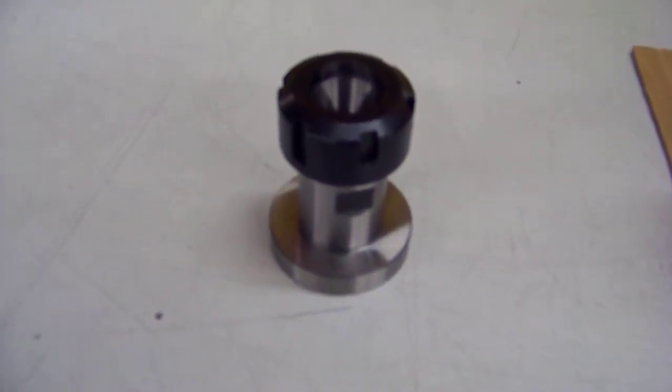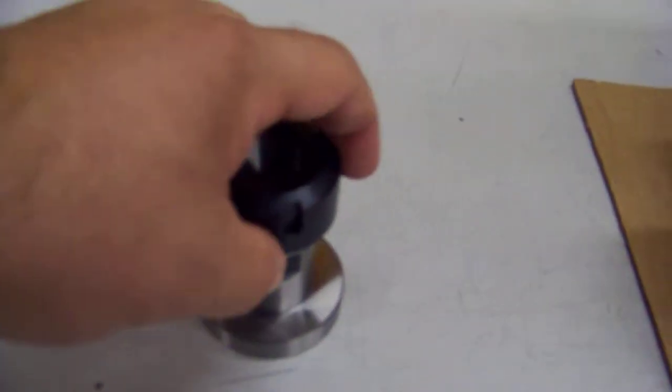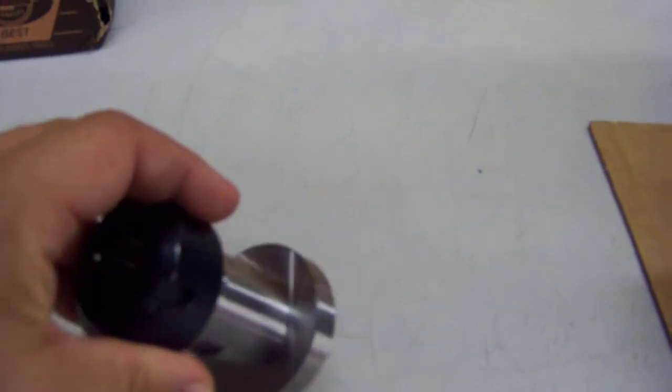Auto Drill Custom ER32 collet chuck with a ring on the back. This is a one-piece construction to go onto a J33 taper.